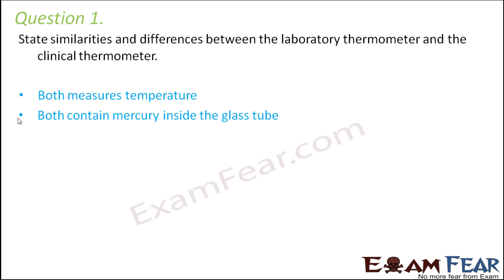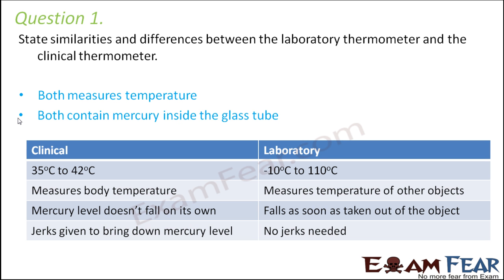If you talk about differences, there are a lot of differences. In clinical thermometer you only have provision to measure temperature between the range 35 to 42 degrees Celsius, whereas in laboratory thermometer you can measure a huge range of temperatures starting from minus 10 degrees Celsius to 110 degrees Celsius. Clinical thermometer is used to measure body temperature whereas the laboratory thermometer measures temperatures of many other objects.